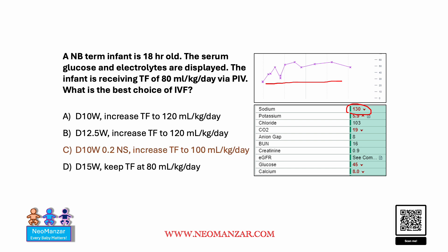The right choice is C. We should select D10 with some normal saline, and we should increase the fluid to only 100 ml because of hyponatremia.